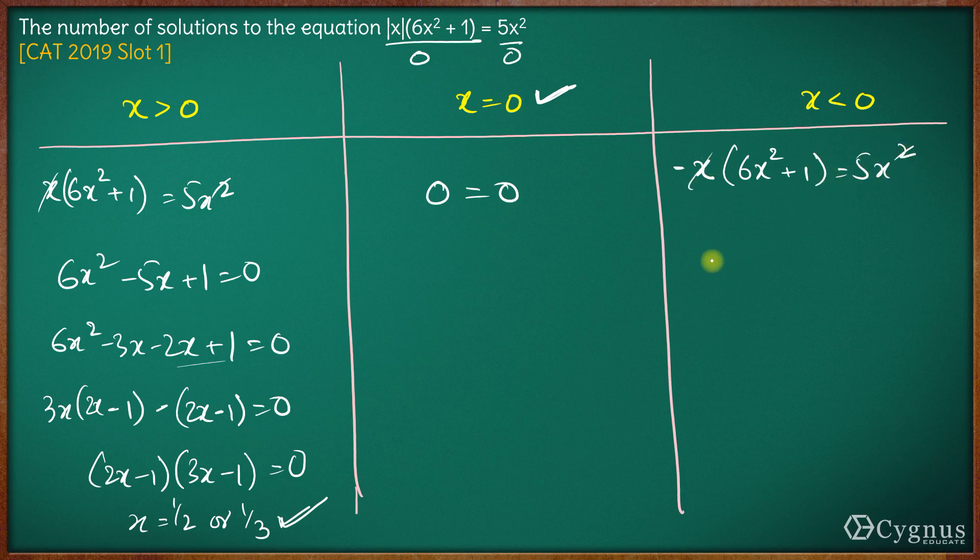So x and x gets cancelled out. Taking all the terms on one side, we will have 6x² + 5x + 1 equals 0.